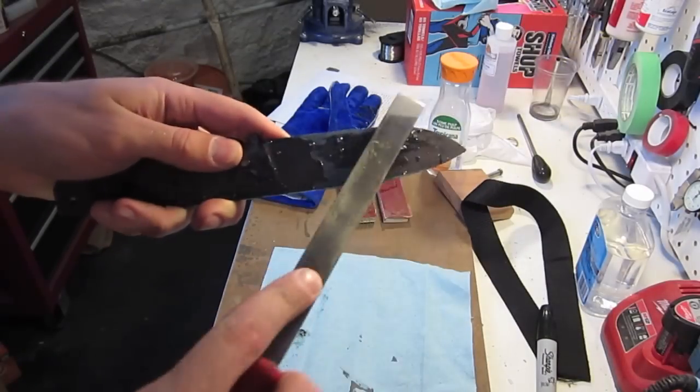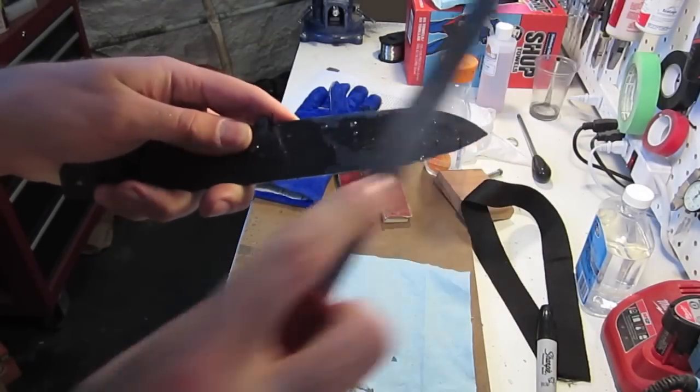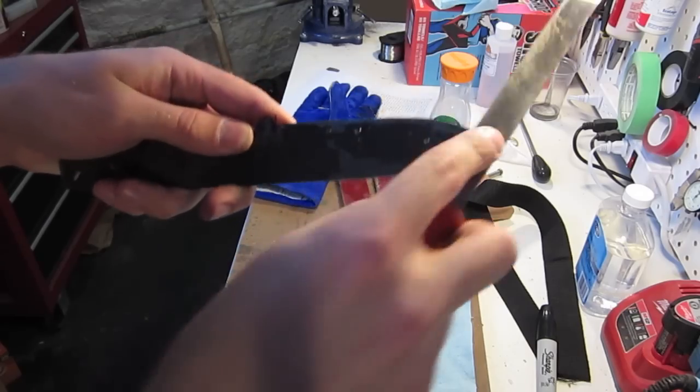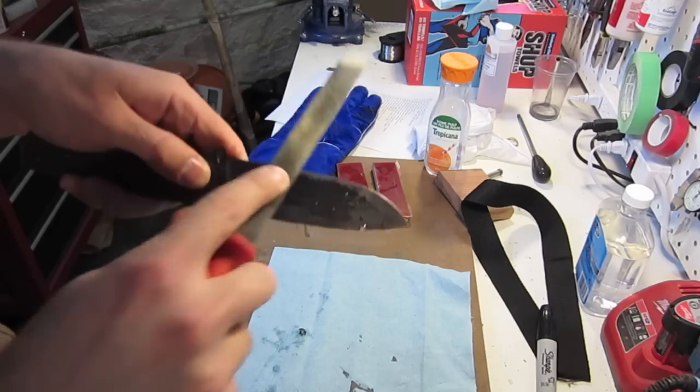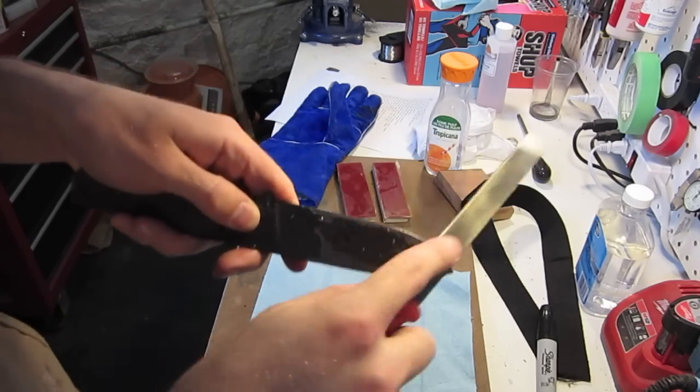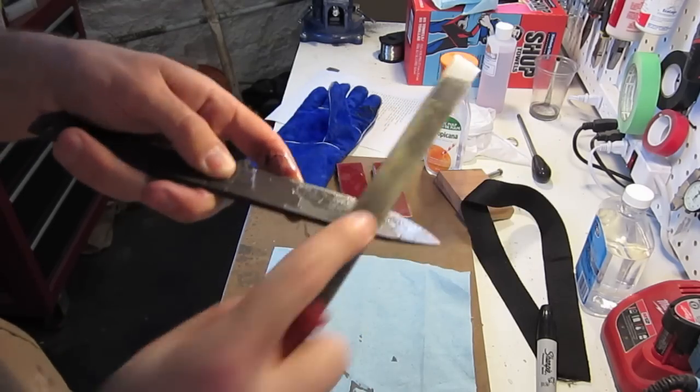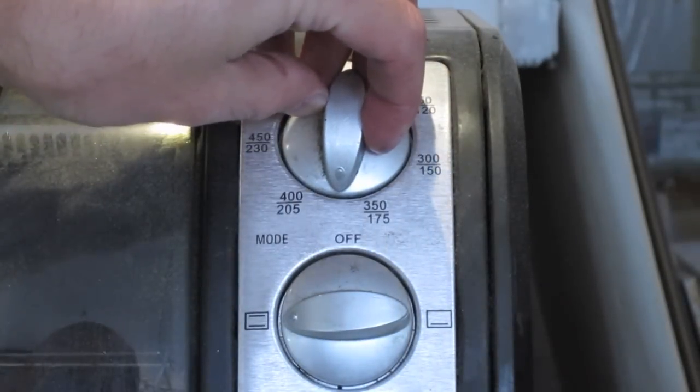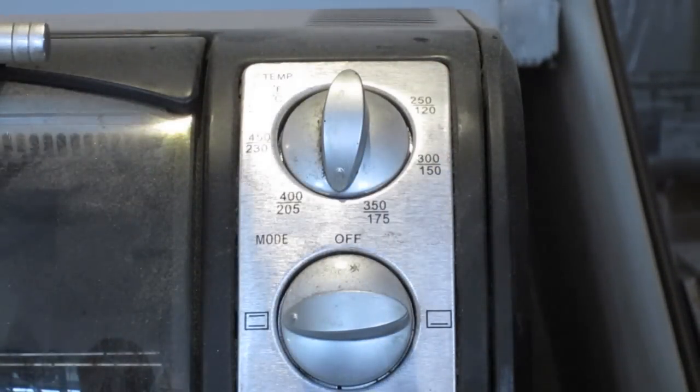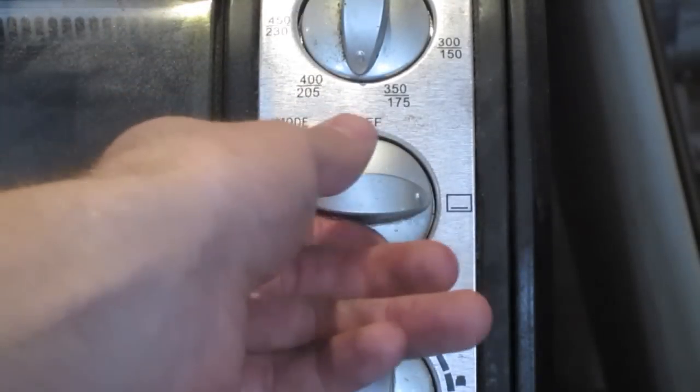After the blade has cooled from the quench, we need to test that it has hardened properly. To do this, we run a file over the edge and spine of the knife. If the knife was hardened properly, then the file will simply skate over the surface of the steel. At this point the knife will be extremely hard, but also quite brittle. If you were to drop it accidentally, it would probably shatter.